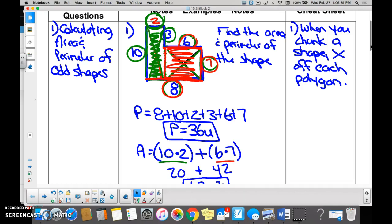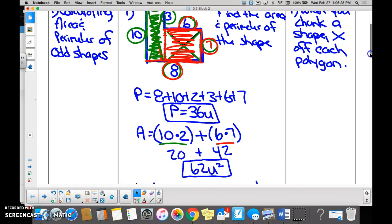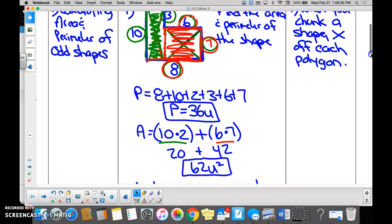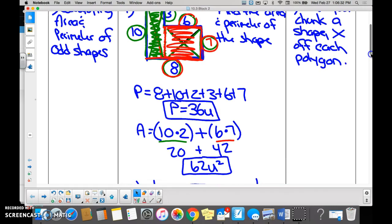Yes. We multiplied 10 and 2 and got 20. We multiplied 6 and 7 and got 42. Added them together and we got 62 units squared.